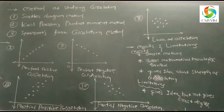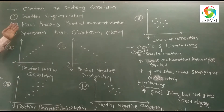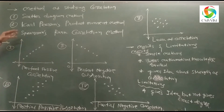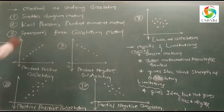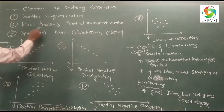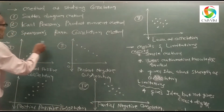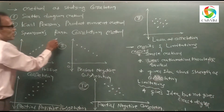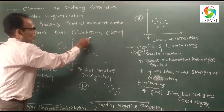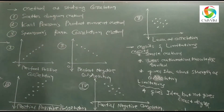There are three methods in our syllabus to study correlation. First is the scatter diagram method, second is Carl Pearson's product-moment method, and third is Spearman's rank correlation method. Today, we will study the scatter diagram method.